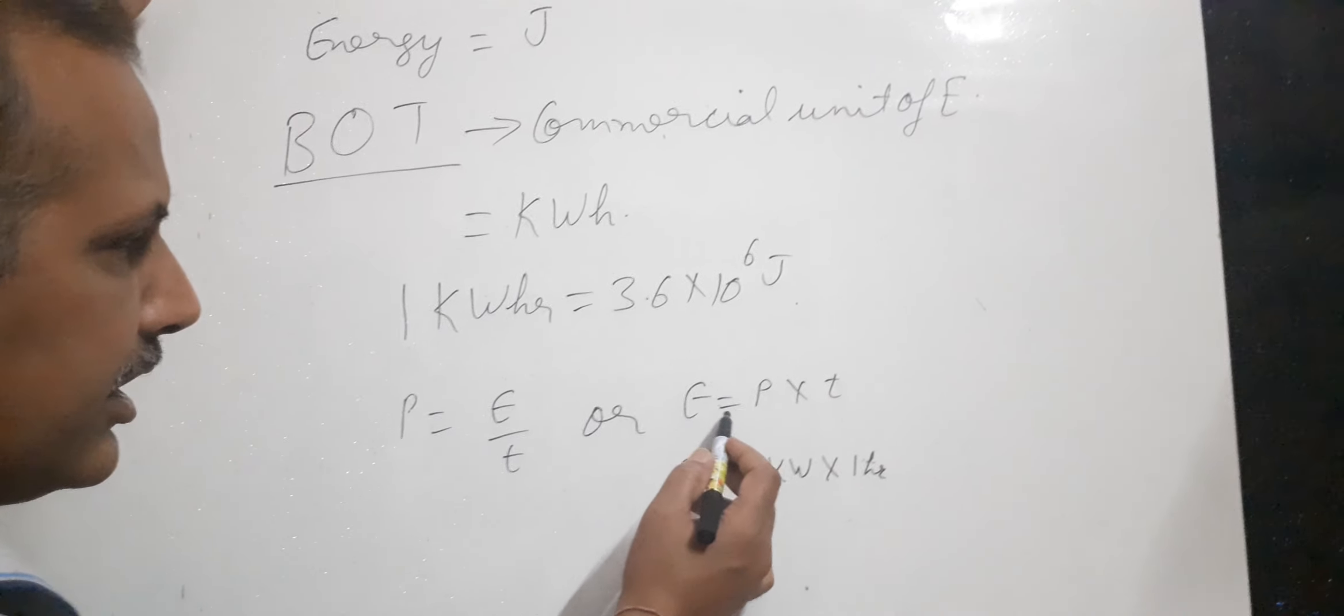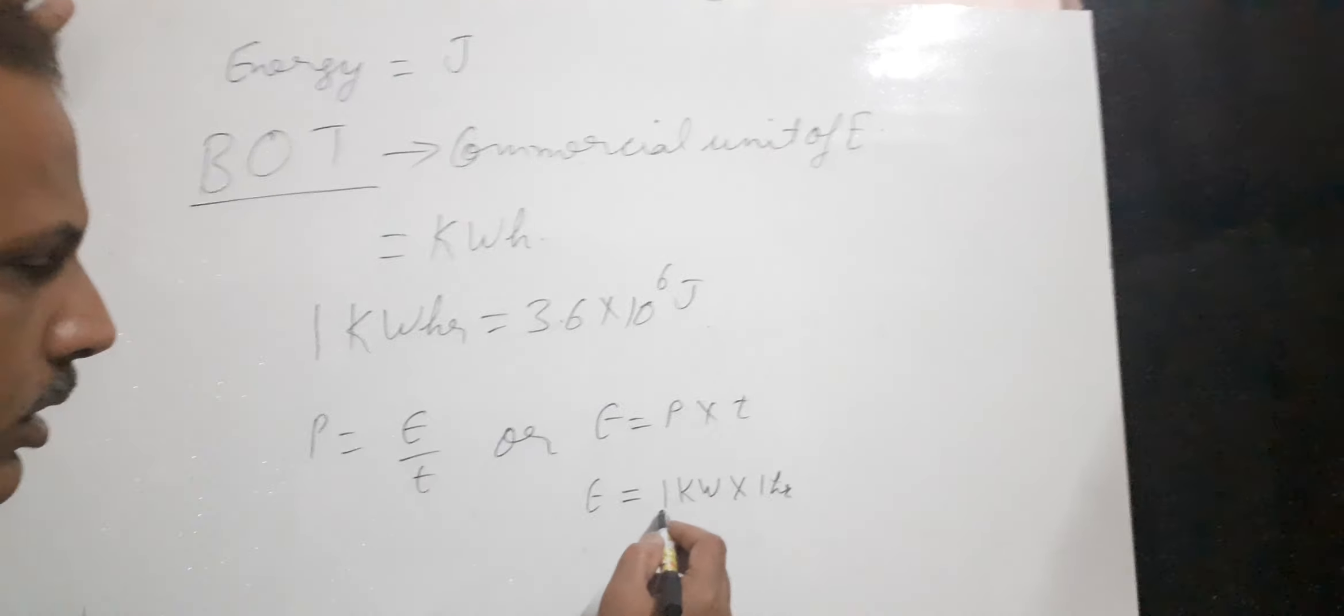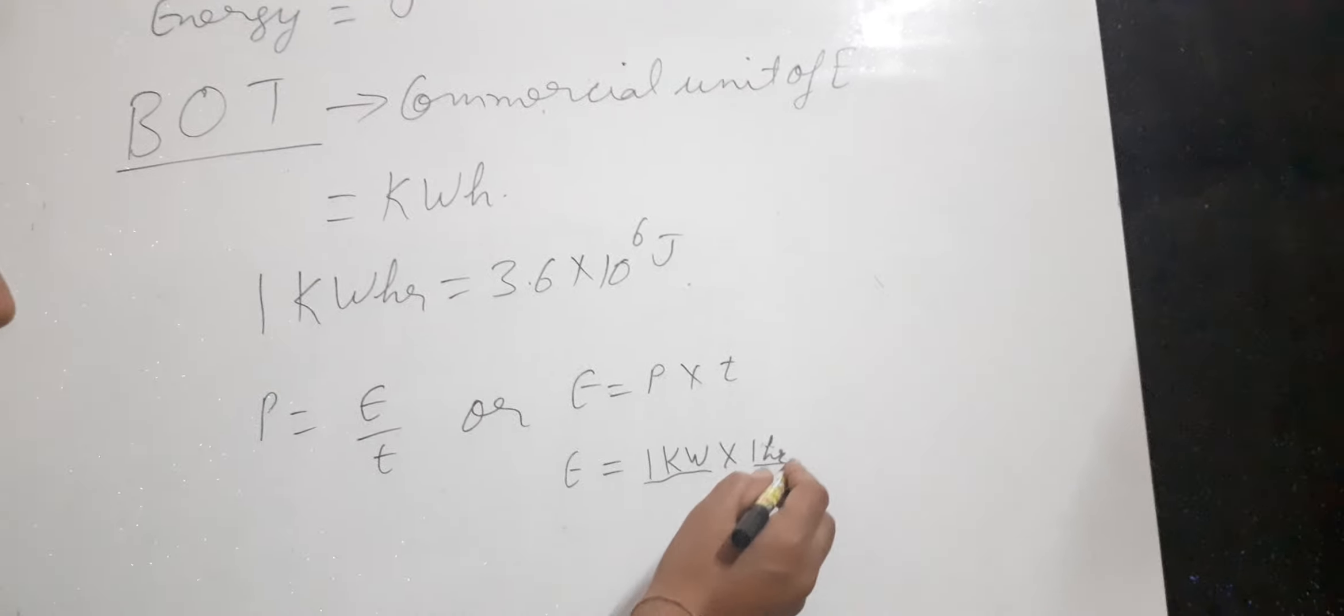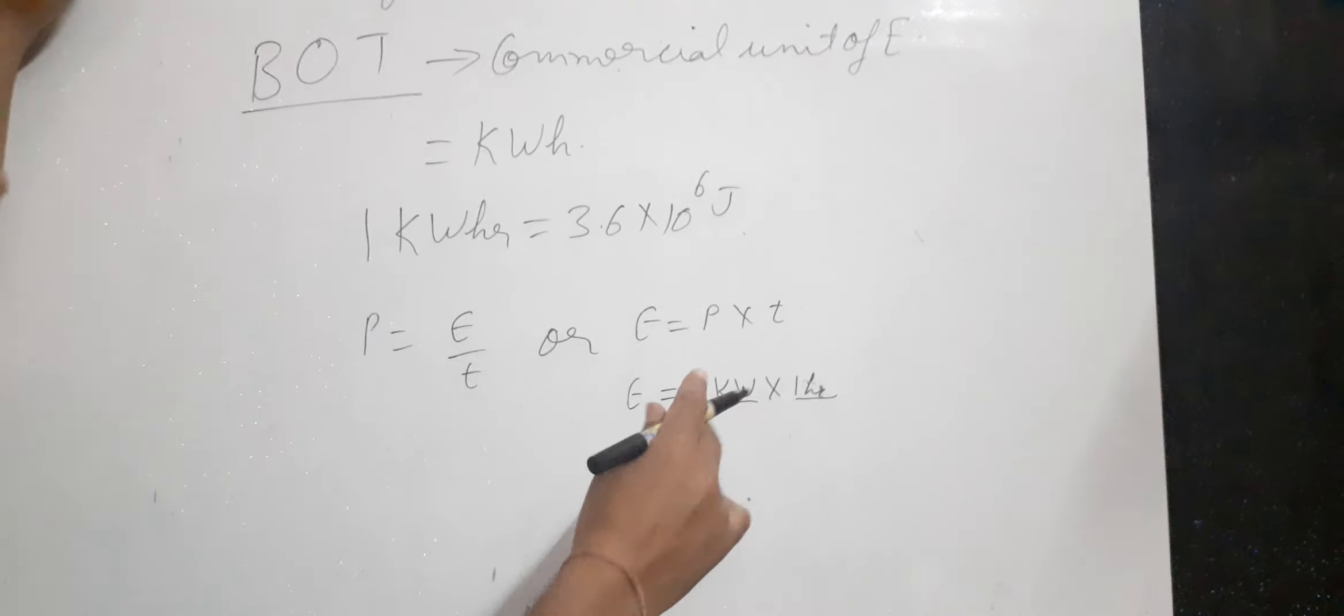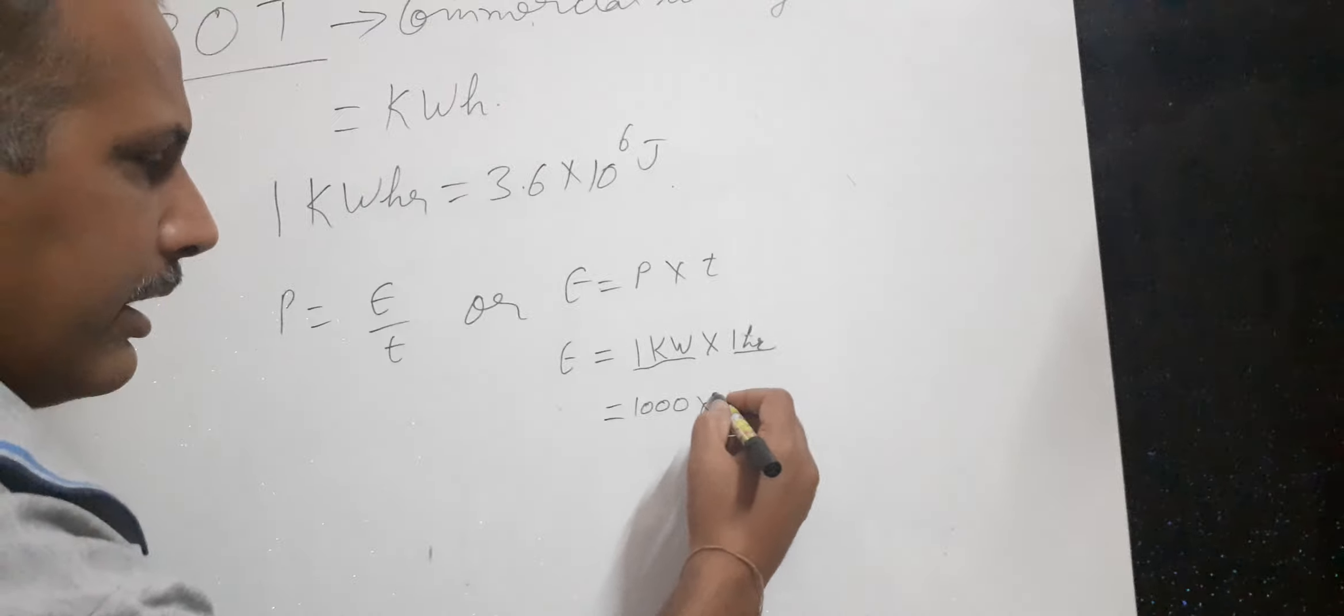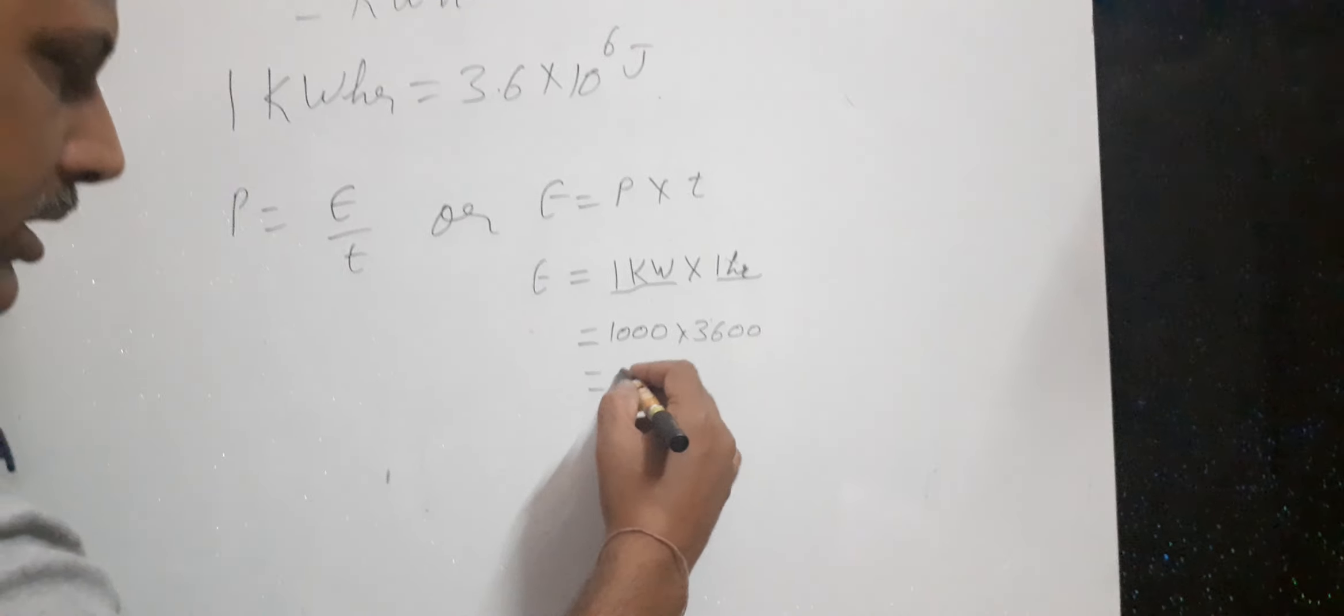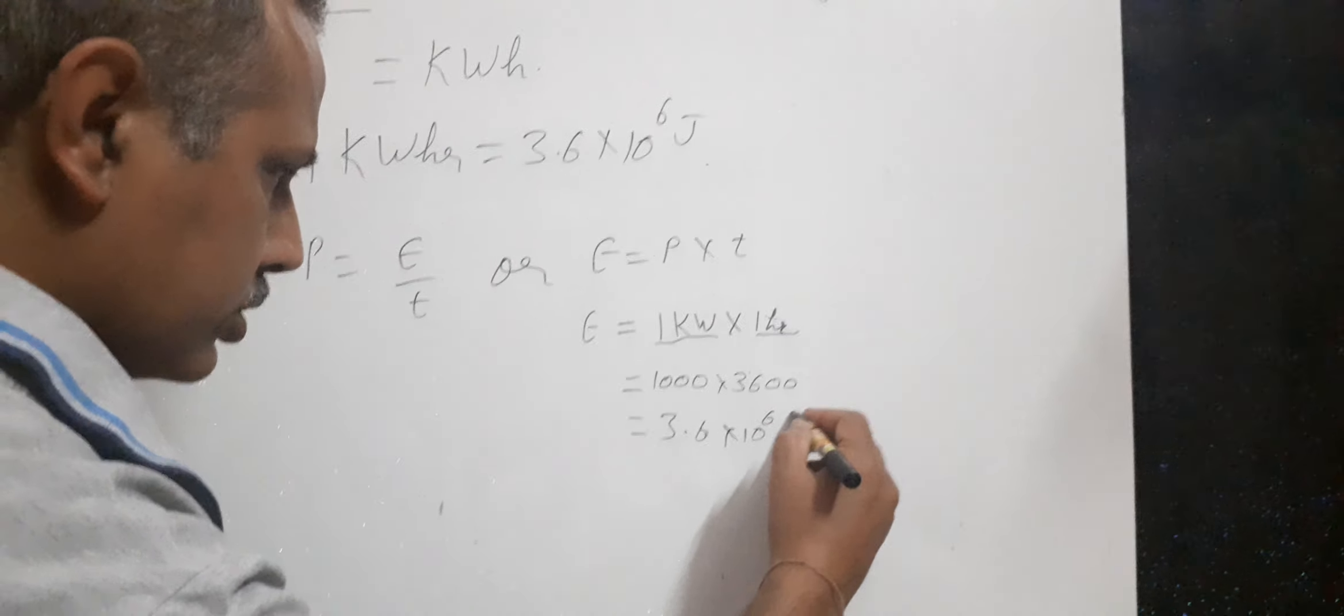You know that energy equals power times time. When you use a 1 kilowatt device for one hour, the energy consumed is 1 kilowatt-hour. One kilowatt is 1000 watts and one hour is 3600 seconds, so this equals 3.6 × 10⁶ Joules.